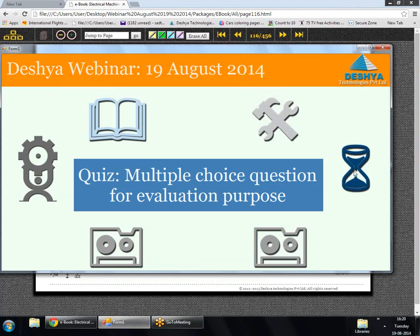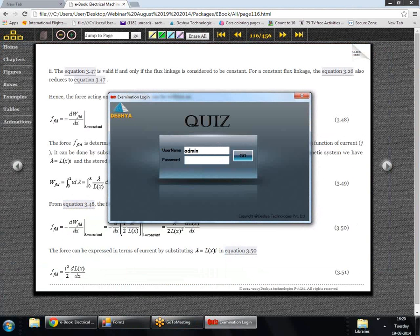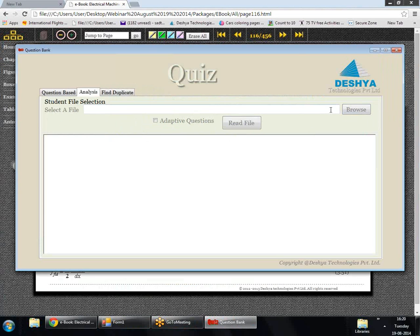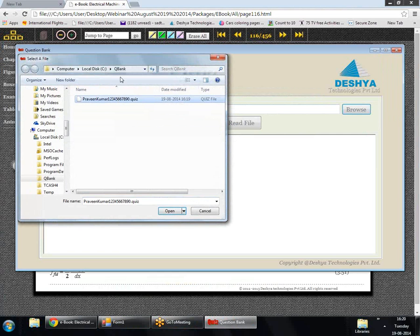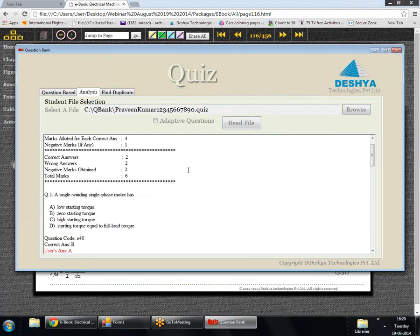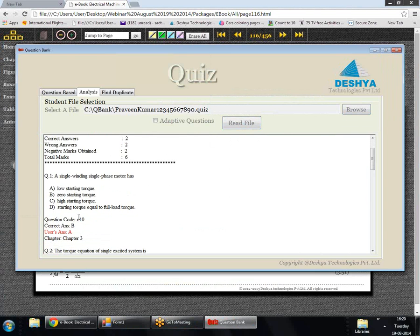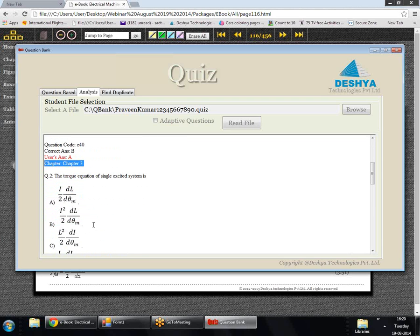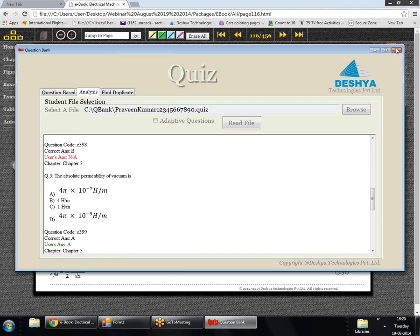There's also an interesting feature about this quiz. The answer script of the quiz is saved, and one can do the analysis of that. The answer script is saved here in the C drive Q Bank. Here all the five questions that we have set in the quiz are there, and here you can see the analysis. The correct answer for this question was B, but I had marked A. This question was from chapter three. If you have a mixture of chapters, it will also mention from which chapter it was asked. This analysis will help the instructor find out the weak areas of the student. This would be a very interesting feature to analyze the performance of the student.